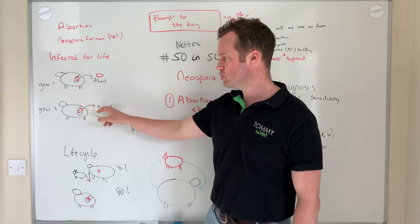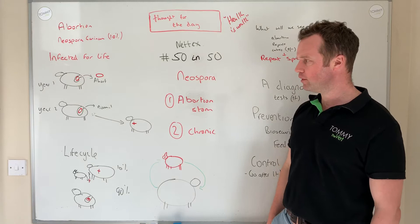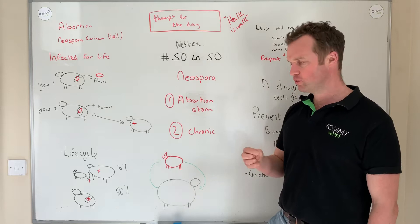So it goes through generations, and that's how the main spread occurs. She might in year two have a normal calf, but that calf would be positive for Neospora yet look normal and healthy. That's how Neospora often spreads in our herds.